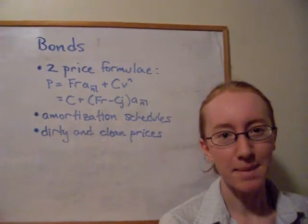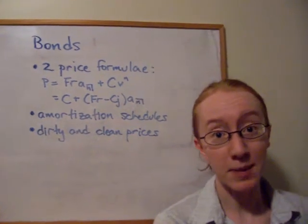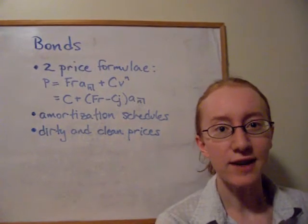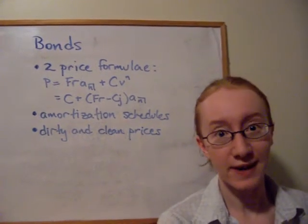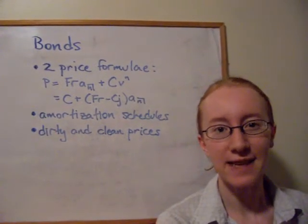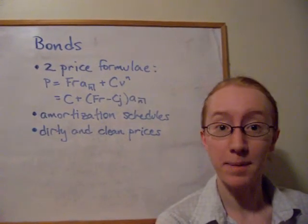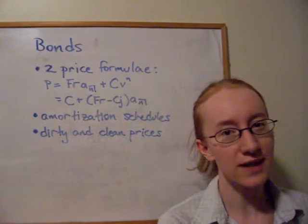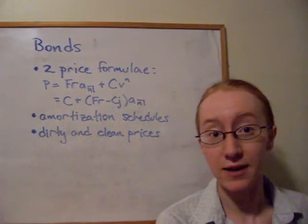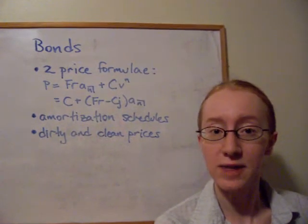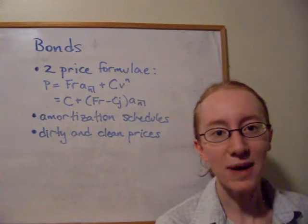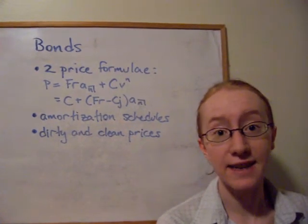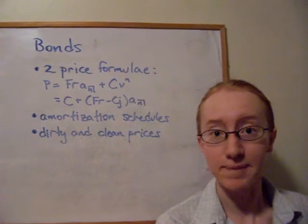The investor gives them money — the purchase price of the bond. In return, the company, country, or province gives the investor coupon payments at regular intervals, usually semi-annually, but there can be other frequencies, as well as a redemption value at the very end of the life of the bond, or at maturity.